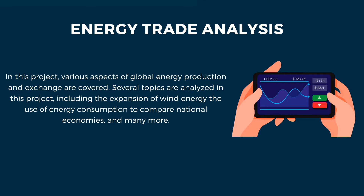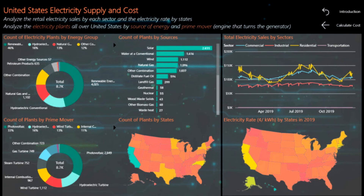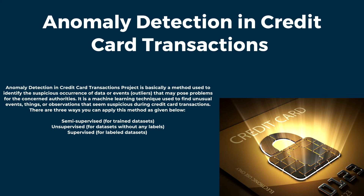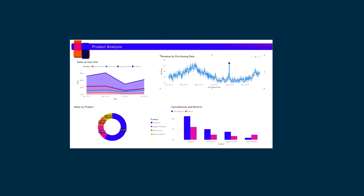Next comes the Energy Trade Analysis. In this project, various aspects of global energy production and exchange are covered. You can generate all the possible insights from that. Several topics are analyzed in this project, including the expansion of wide energy use, energy consumption, comparison of national economies, and many more. You can see where most of your energy consumption is happening, where less is happening, and how you can balance all the different sites. You can use the International Energy Statistics Dataset for this kind of project. Next comes anomaly detection in credit card transactions. We already know that there are so many frauds happening throughout the world. How to stop them and what are the main reasons these frauds are happening? You can use Microsoft Power BI to analyze that kind of dataset. You can either use the credit card fraud detection dataset or the credit card dataset.